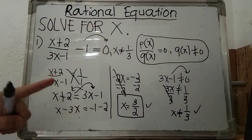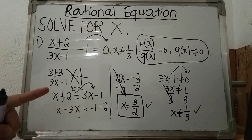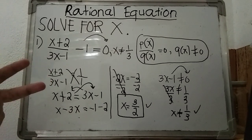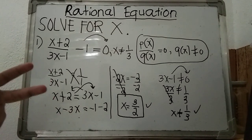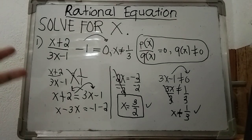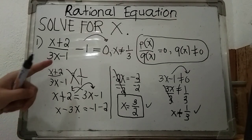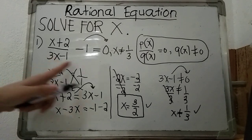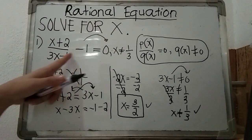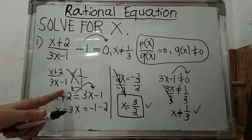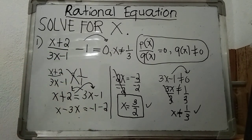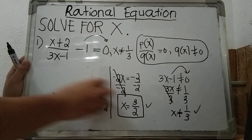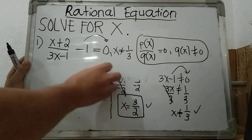This is the first way, by using cross multiplication. From this given rational equation we can actually use a second way. The second solution for finding x is by using the LCD — we are going to combine the first term and second term, which are separated by a subtraction operation, into a single expression on the left.